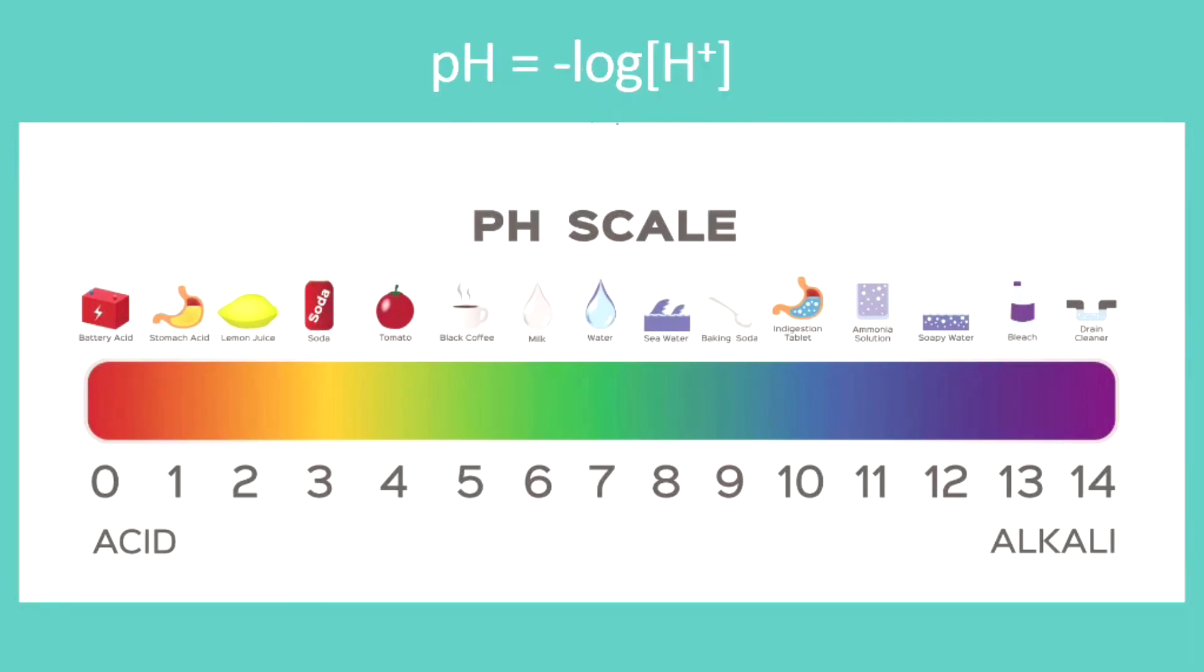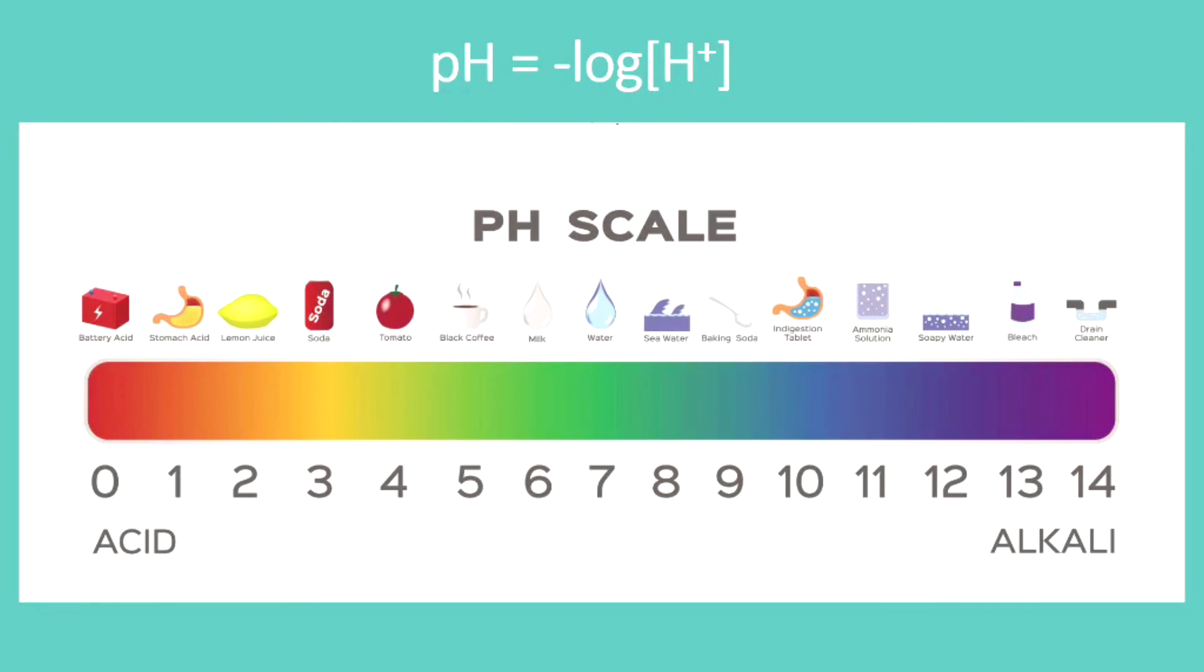So the pH is actually equal to, mathematically, and we'll use this in a future lesson, the negative log of the concentration. Remember, these brackets mean concentration in the units of molarity. The concentration of those hydrogen ions. And when you calculate that out, you'll get some number, usually between 0 and 14, though not always. And if it's below 7, it's acidic. And if it's above 7, it's basic.